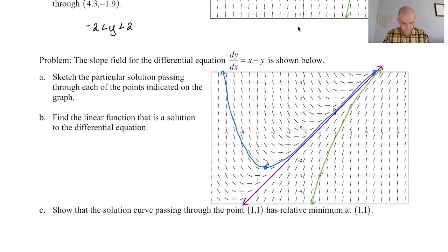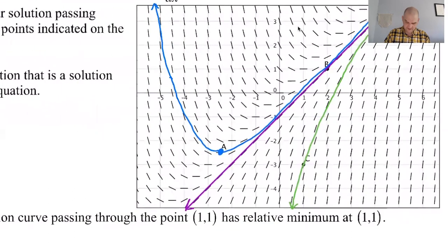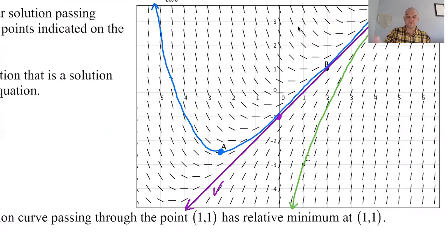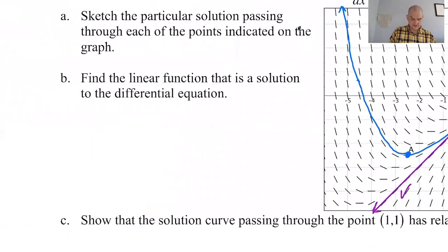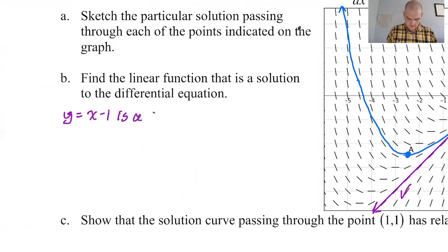The next thing is to find the linear function that is a solution to the differential equation. Looking at the graph, it looks like it goes through (0, −1) and has a slope of one since it also passes through (1, 0). So I think the solution is y equals x minus one.